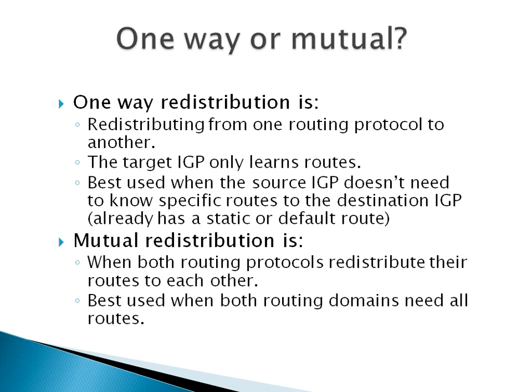Mutual redistribution is much more common. That's when both routing protocols want to know about all routes from the other IGP. In our example, if we had EIGRP on our side and the provider had OSPF, we'd redistribute from OSPF into EIGRP and from EIGRP into OSPF. The idea is when both sides need to know about all routes from the other routing protocol.